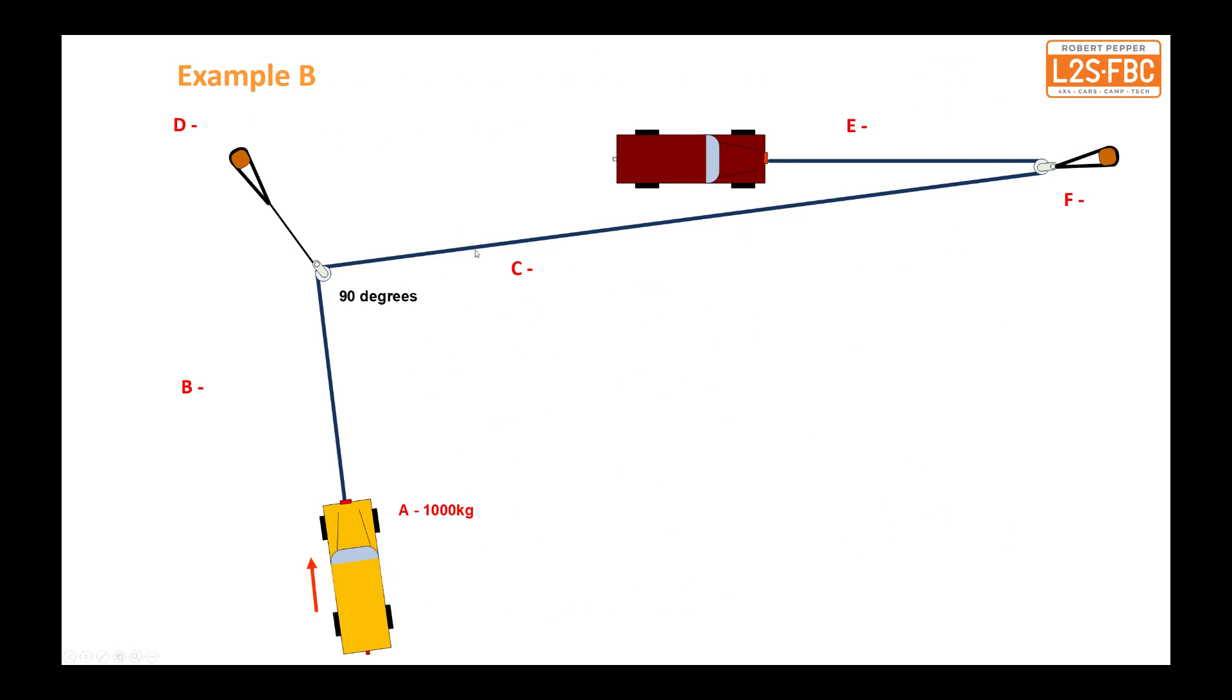Okay, so we'll do example B first, and let's run through that. Here we've got a casualty, it takes 1000kg to move it, and therefore in this line here we've got 1000kg there, 1000kg there, fairly straightforward. Now what's the load here? You might think that's also 1000kg, but it's actually more because we've got 1000 pulling that way, 1000 pulling that way, and that's 41% more, so 1400kg goes there. Now that's interesting because that is more than the amount of force needed to move this vehicle. So there's your first point, when you've got a 90 degree redirect in, you're actually putting more strain on the anchor than you would, than you are the force required to pull the casualty.